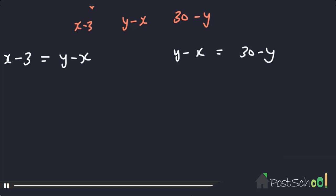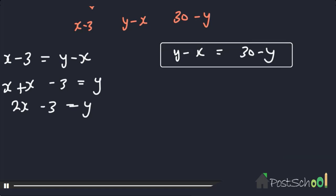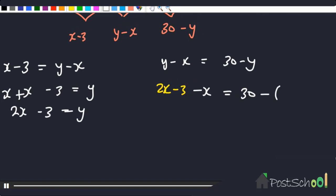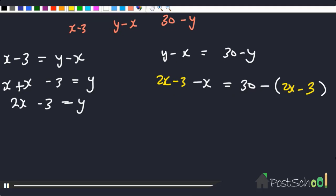From the equation x − 3 = y − x, taking x to the other side: 2x − 3 = y. Now substituting y = 2x − 3 into the equation y − x = 30 − y, we replace each y with (2x − 3): (2x − 3) − x = 30 − (2x − 3).